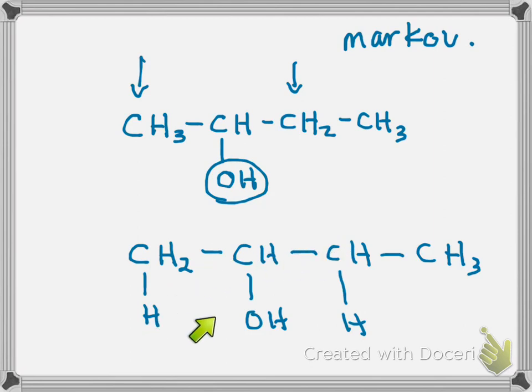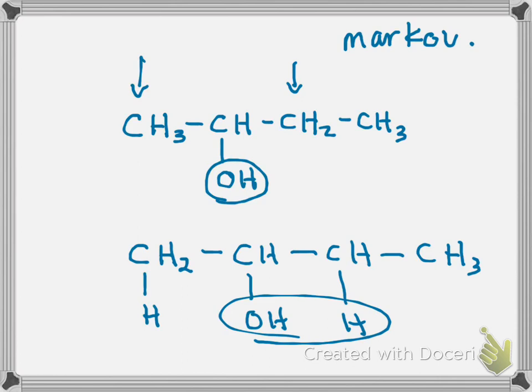There are two hydrogens on one side and one hydrogen on the other besides the one you'd remove — so the double bond forms on that side. Following Markovnikov's rule, you remove those two and the double bond is in the middle of the molecule. Whichever hydrogen gets lost determines where the double bond is — always take from the carbon with the fewest hydrogens.